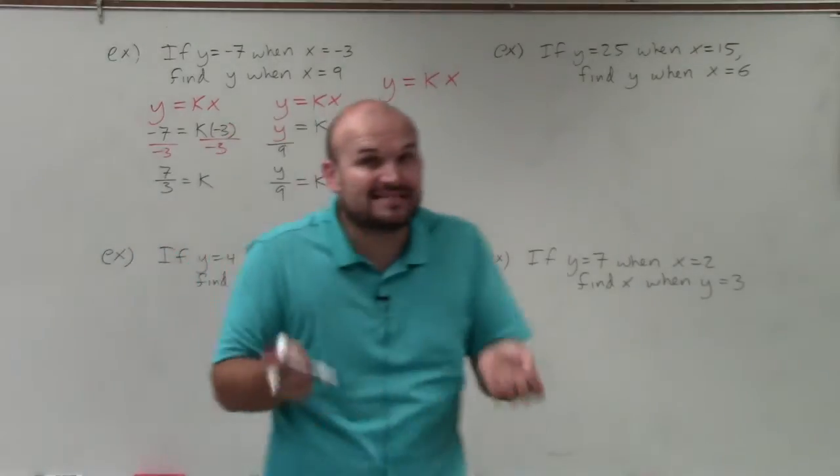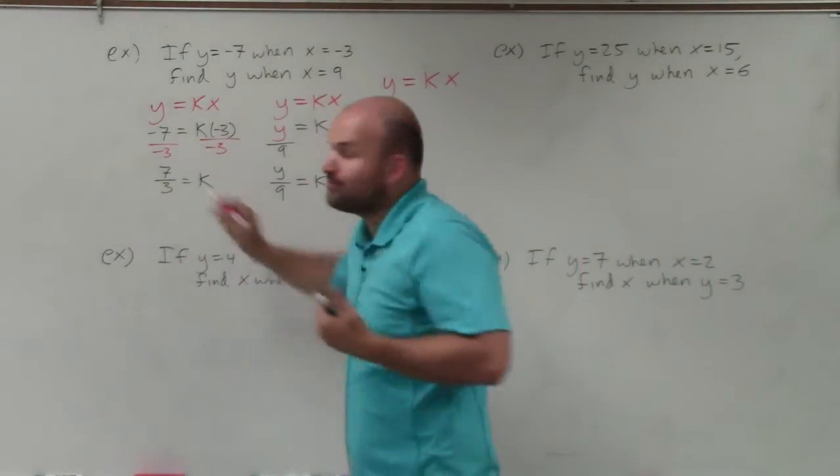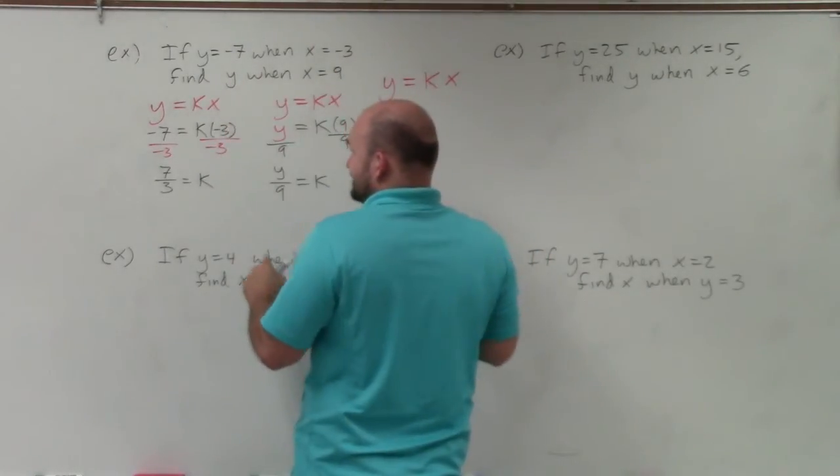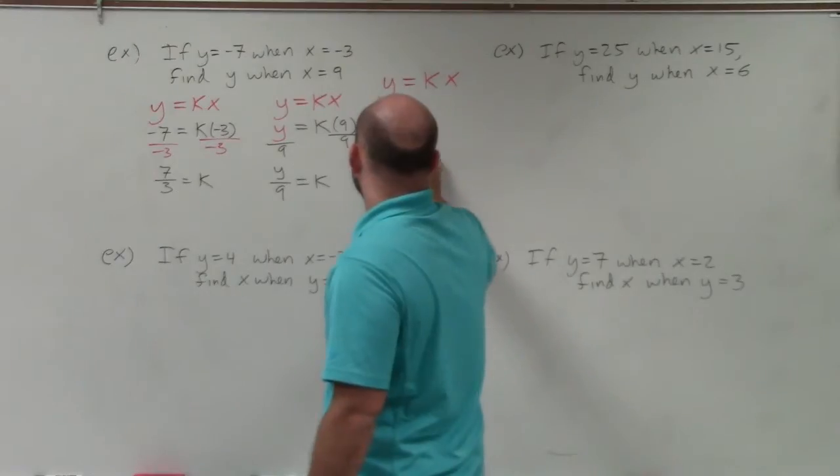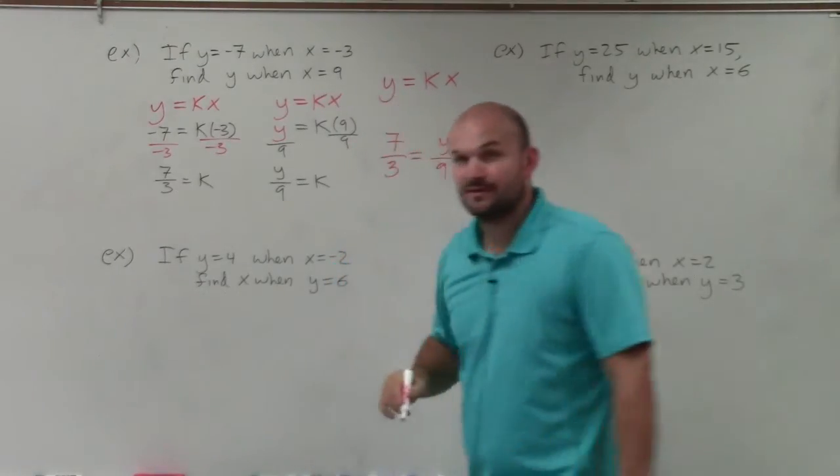Remember, they both vary directly with x, so their k is equivalent. To solve this problem, the k is exactly the same for both. Therefore, all I need to do is rewrite this as 7 thirds equals y over 9.